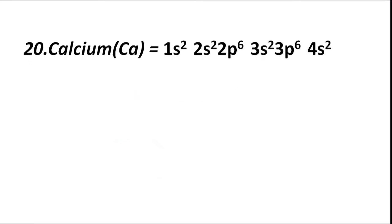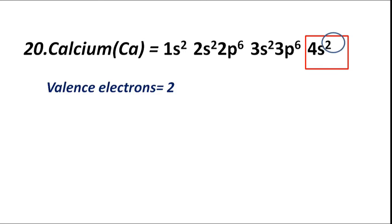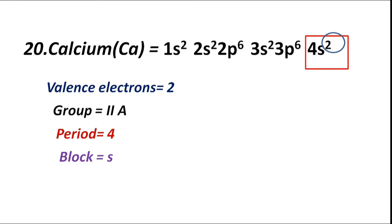Atomic number 20, calcium (Ca), has electronic configuration 1s2 2s2 2p6 3s2 3p6 4s2. The valence shell is N or fourth shell, which has valence electrons 2. Valence electrons are 2, therefore group IIA or 2A. Period 4 — highest coefficient is 4. Block S — valence electrons fill 4s sub-shell. Valency is 2.